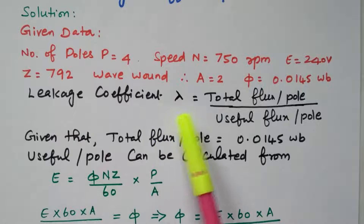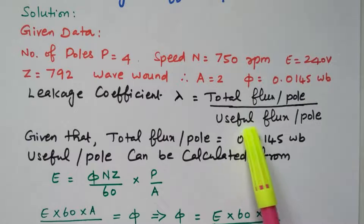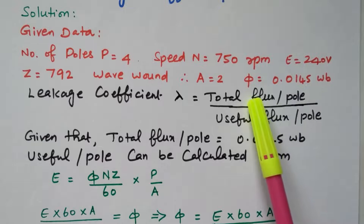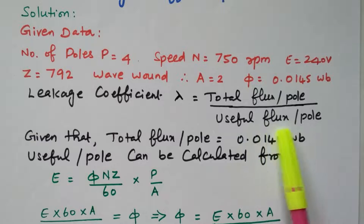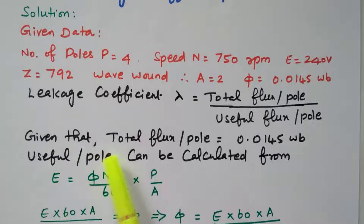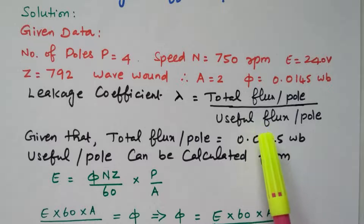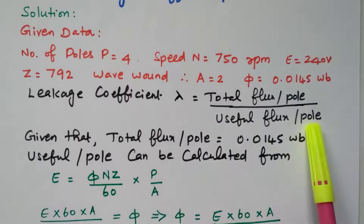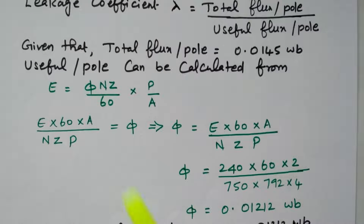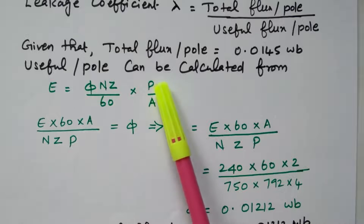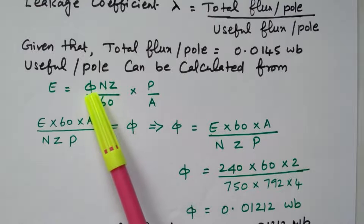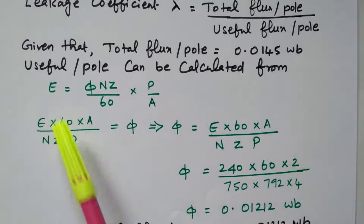The leakage coefficient lambda is given as total flux per pole divided by useful flux per pole. The total flux per pole is given in the problem as 0.0145 Weber. Now we need to find the useful flux. Useful flux means the normal flux we refer to in the equation. The EMF value is given in the problem itself, so we can refer to the formula: phi times N times Z divided by 60, into P by A, to find the useful flux.